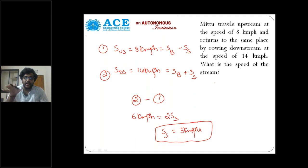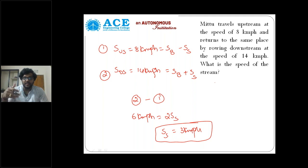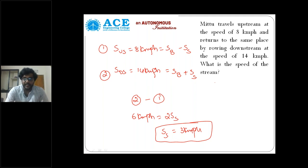Upstream means against the stream or against the wind you are traveling, so speed will reduce. Downstream means along with the wind or along with the water flow the boat is traveling, so speed will increase. That's why downstream is SB plus SS, and upstream is SB minus SS.